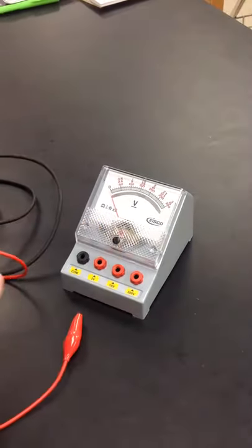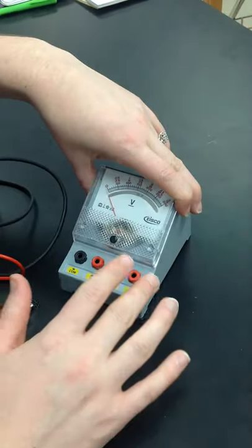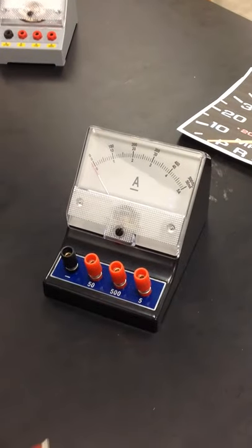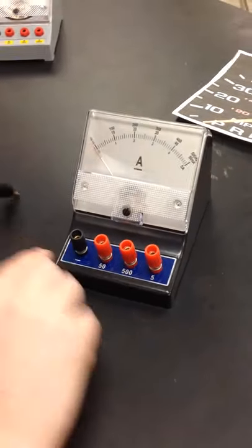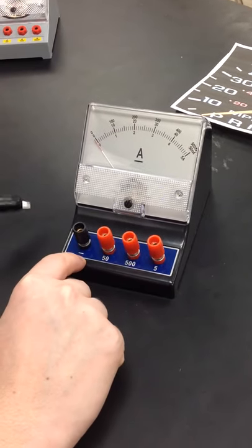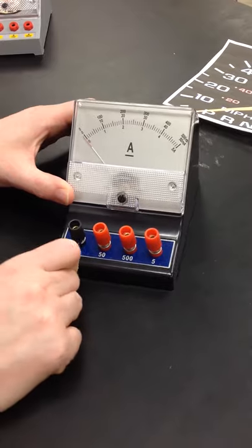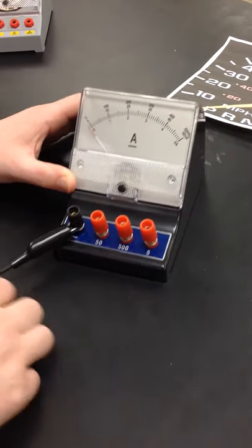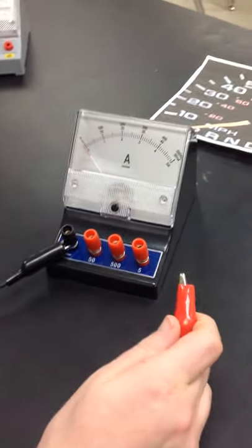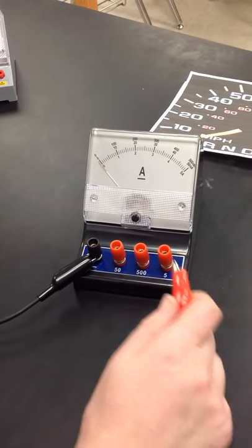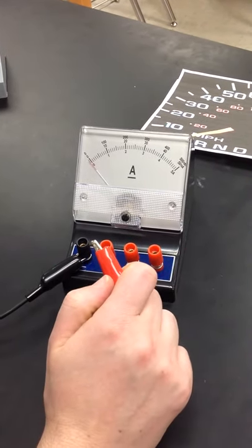When we switch to the ammeter, which is measuring current as opposed to voltage, it gets slightly more complicated, but it's the same general principle. So when we look here, we see that the negative is marked here. So I check, I've got my negative side of the battery, and I clip this on down here.